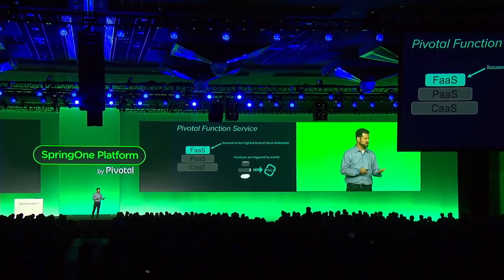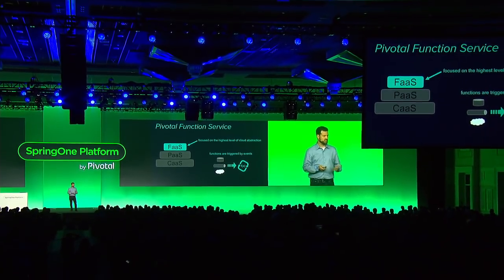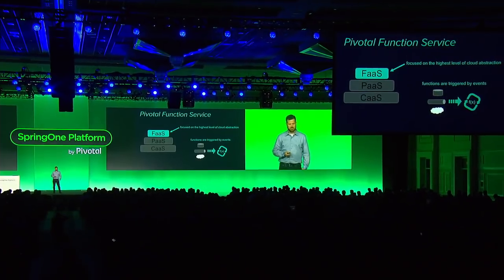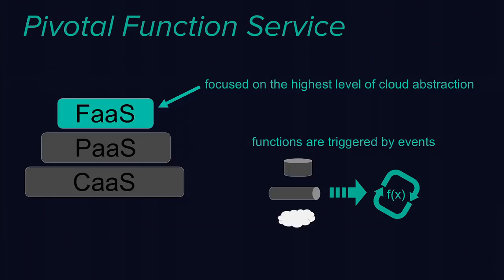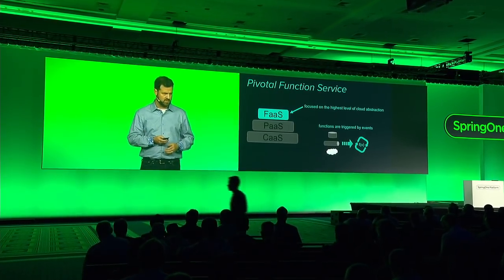For example, you might have an application to process insurance claims and you want to send notifications on status updates — that status update notification could be implemented as a function. Or you might have a banking application where you want to provide online help with a chatbot. The chatbot needs to submit the user question to a cloud-based natural language processing service and then look up a result in your knowledge base.